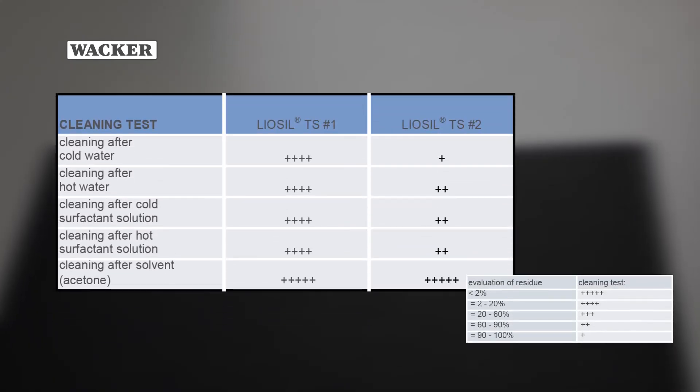Indicate the weight of the residue after cleaning as a percentage of the starting weight prior to cleaning. Rank the residue in one of the five categories, ranging from excellent, below 2%, to not cleanable, 90 to 100%.